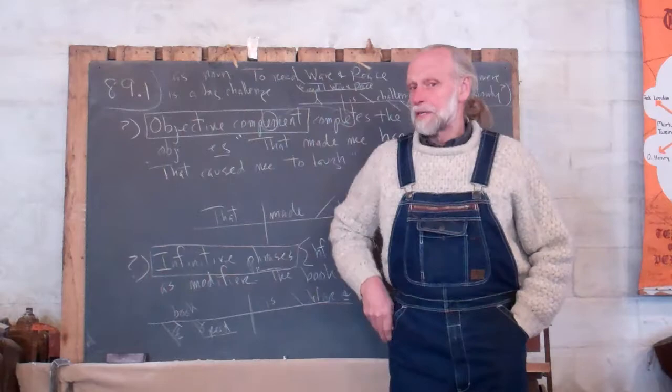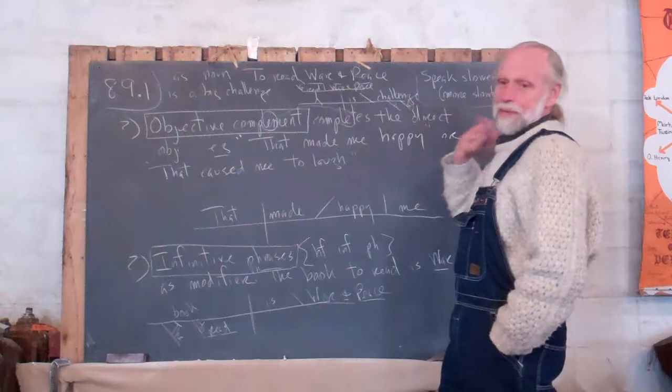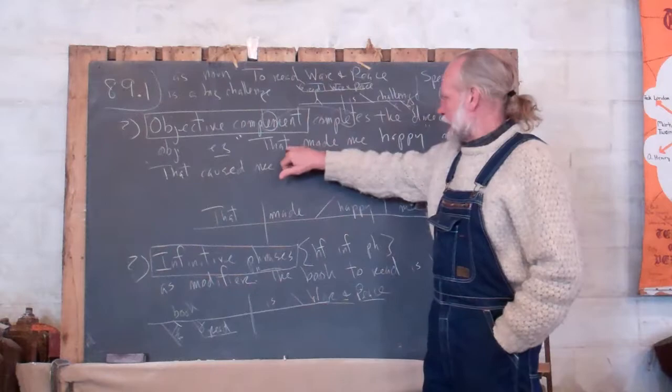Well, in a sentence like, that made me happy. That made me happy. Well, it would seem like, here's the direct object. Like, that made me, I made a cake.